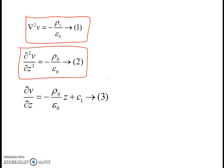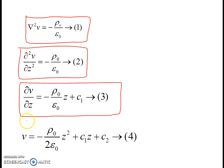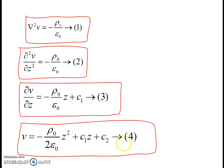Integrating this equation with respect to z gives dV/dz equals minus rho naught over epsilon naught times z plus c1. Integrating again with respect to z gives the expression for potential V, which contains two unknown constants c1 and c2. To determine these unknown constants, we apply the boundary conditions.